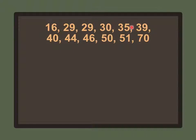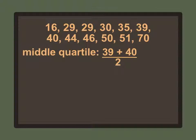So we have a distinct upper and lower half. To find the middle quartile — remember, it's just the median. The middle numbers are 39 and 40. We can't say the median is both 39 and 40, so we take the average: 39 plus 40 divided by 2, which means our middle quartile, or median of the entire data, is 39.5.